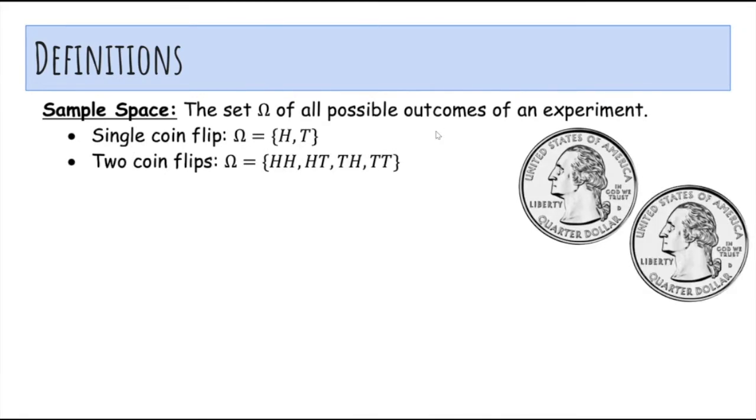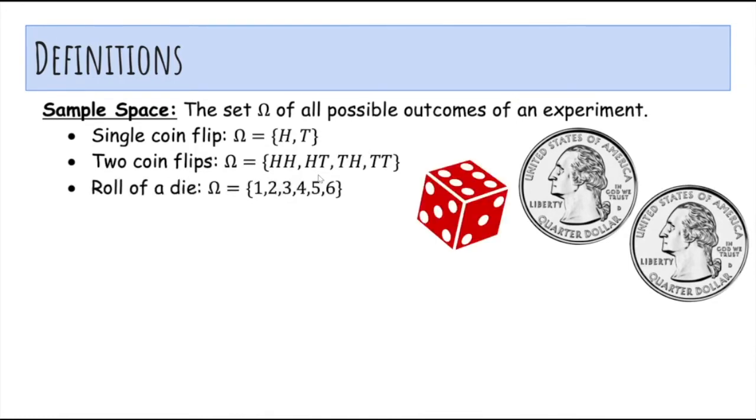If you flip a coin twice, you could get heads-heads, heads-tails, tails-heads, or tails-tails. Those are all the possible outcomes. Or if you roll a dice, all the possible outcomes would be 1 to 6.